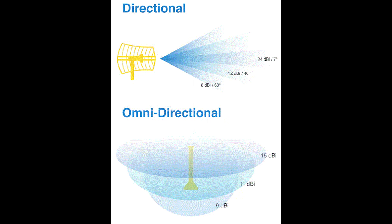An antenna's gain value represents the difference between the zero dBi isotropic and the antenna's power. The dB in dBi stands for decibels, and the I stands for a hypothetical isotropic antenna. The higher the decibel figure, the higher the gain. When looking for wireless antennas, remember higher gain value means stronger send and receive signals.